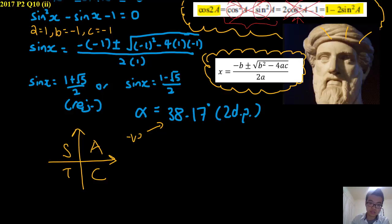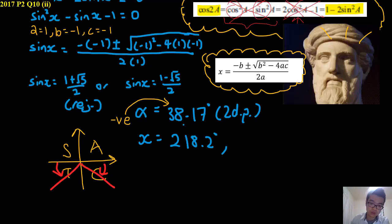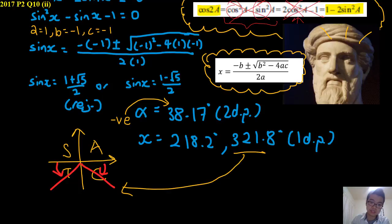And since this is negative, we use T and C. So here, here. And we do the intermediate step. I'm not gonna write, but 180 plus 38.17. So you get 218.2. Go straight to 1 decimal place. And here, just the same. 360 degrees, minus 38.17. And you get 321.8. And that's part 4.